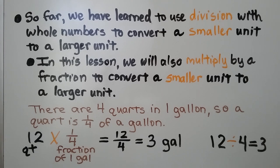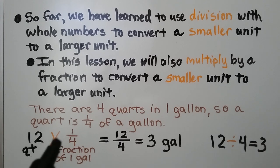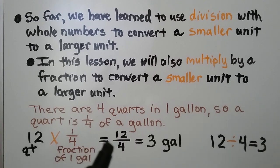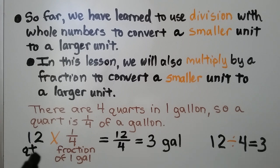There are four quarts in one gallon, so a quart is one-fourth of a gallon. If we have 12 quarts, we can multiply by one-fourth, which gives us twelve-fourths, equal to three gallons. Multiplying by one-fourth is the same as dividing by four — we get the same answer.